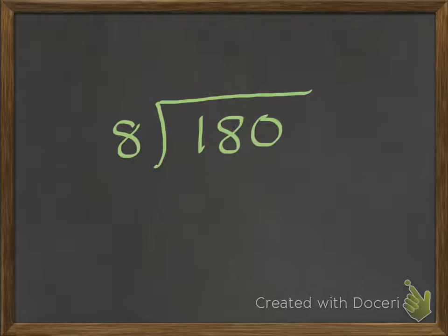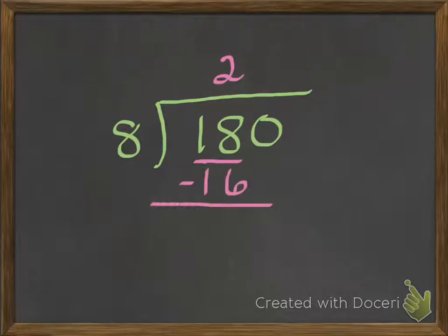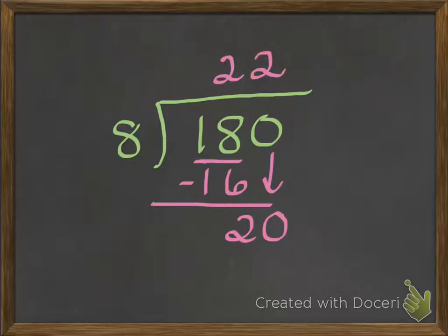Our first digit is one. One can't be divided by eight, so we go look at the next digit. Now we have eighteen divided by eight. Eight times two is sixteen. Eighteen minus sixteen is two. Bring down the zero — we get twenty. Eight times two is sixteen — that's the closest we're going to get to twenty — and twenty minus sixteen is four.